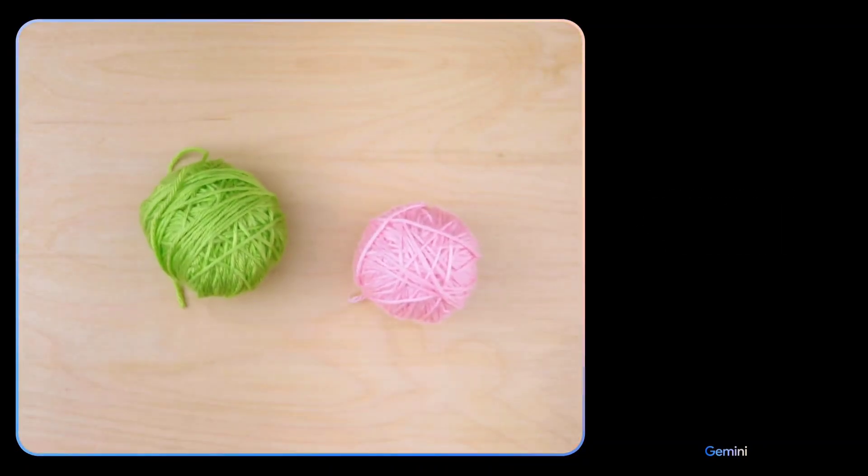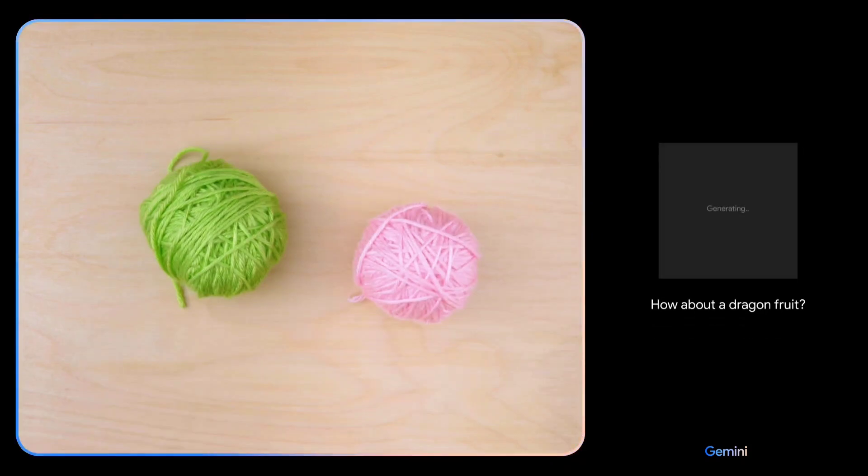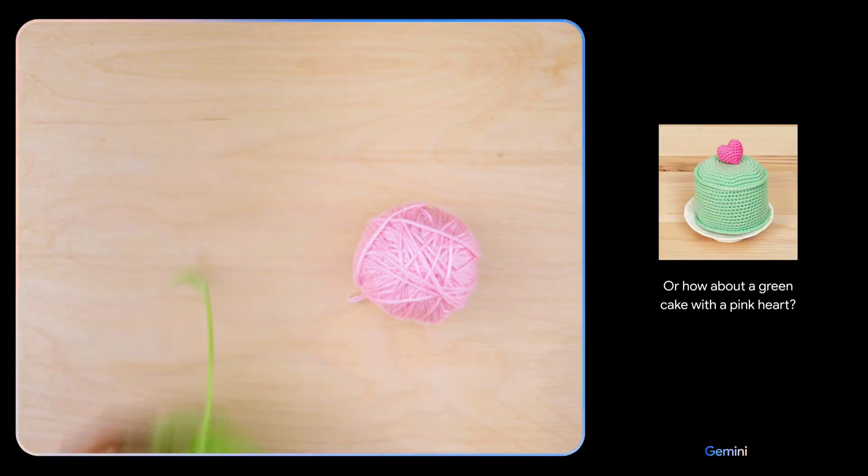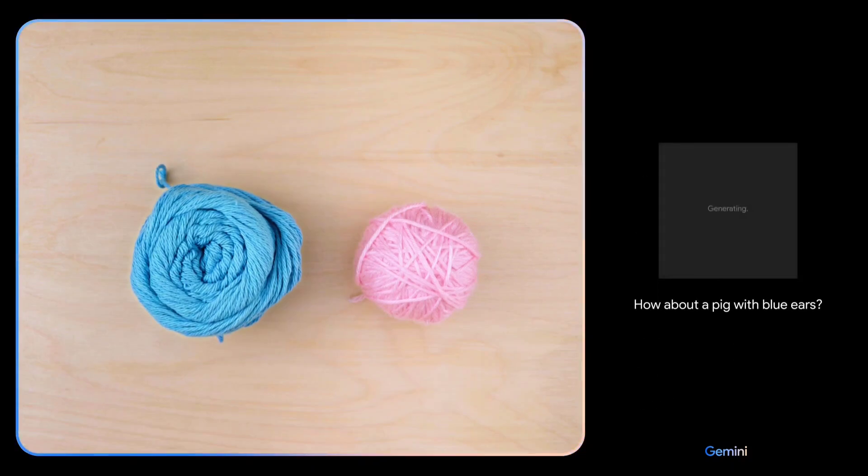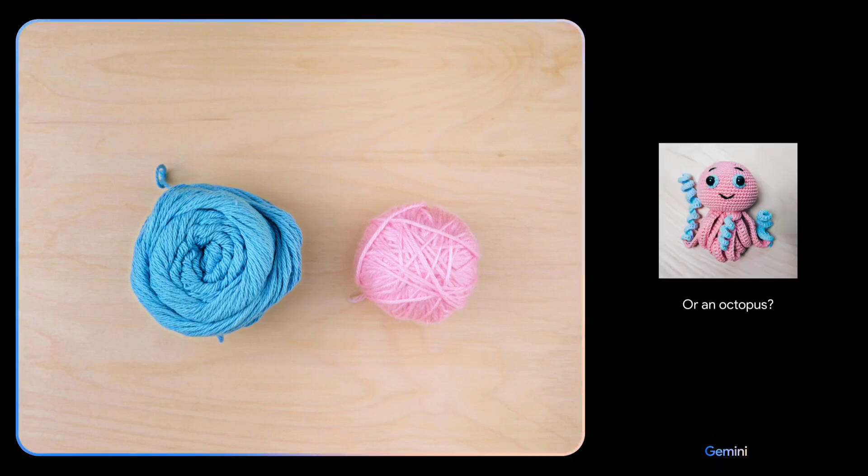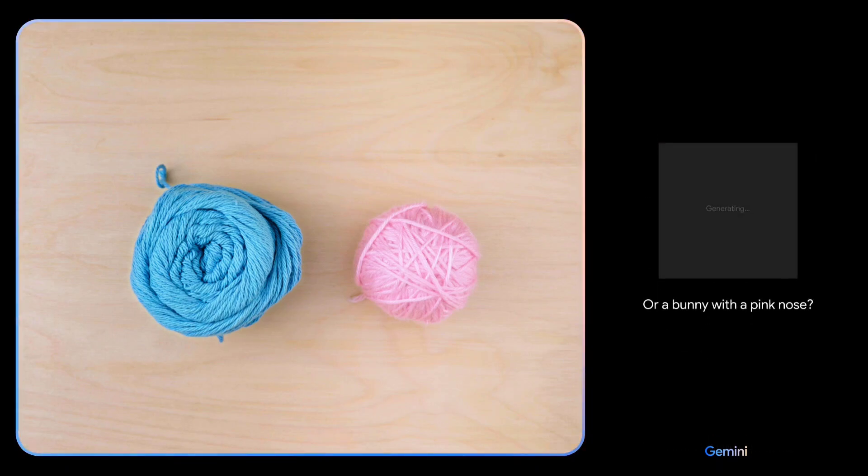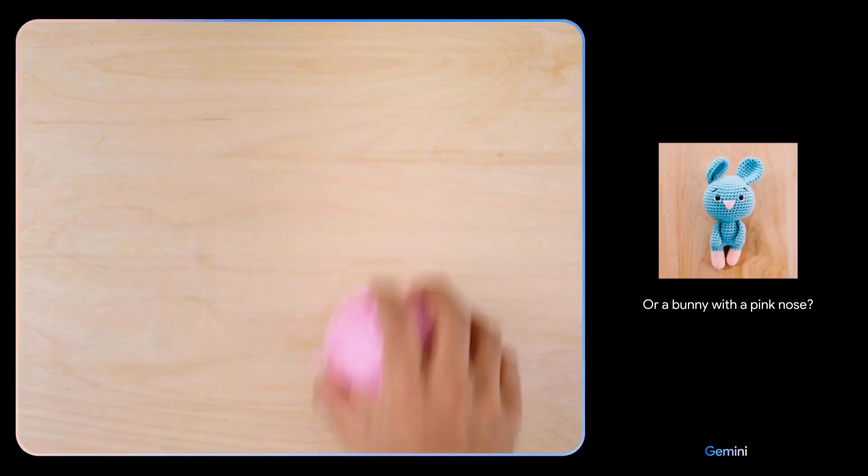Give me some ideas for what I could make with this. I see pink and green yarn. How about a dragon fruit? Or how about a green cake with a pink heart? Okay, how about these colors and maybe show me some animals. Okay, now I see blue and pink yarn. How about a pig with blue ears or an octopus? Or a bunny with a pink nose? I'll keep those in mind.